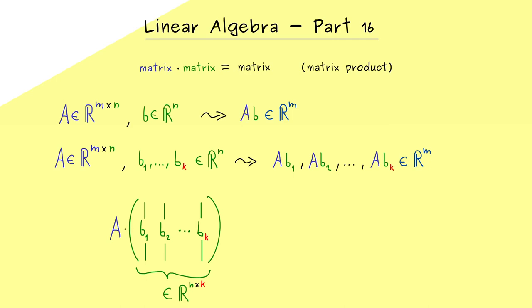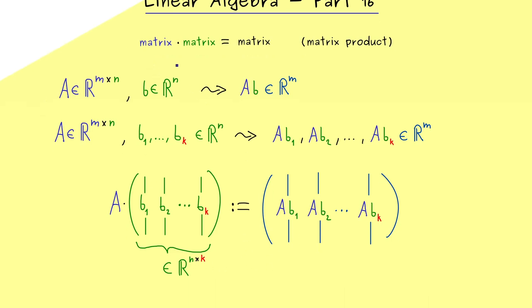And of course we could read and define this as a multiplication. Now what should happen is that we get out a new matrix again with exactly k columns. Moreover, what we want is that at each column we just apply the matrix A as before. Therefore the first column of the new matrix should read AB₁, and then we simply continue until we have the last column ABₖ. And with this you should see we have successfully defined a matrix product.